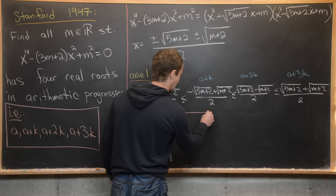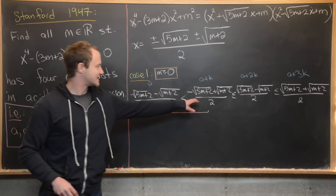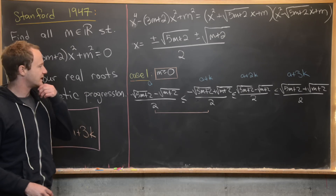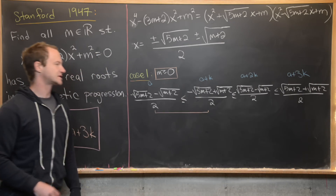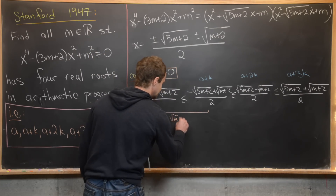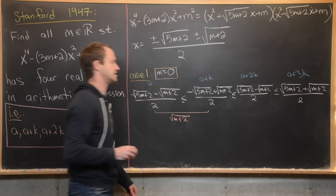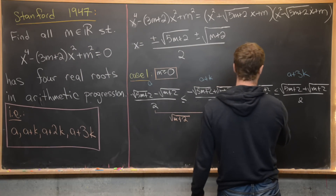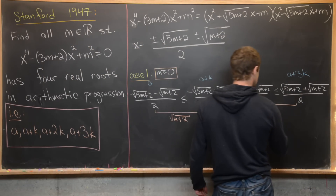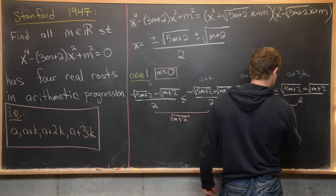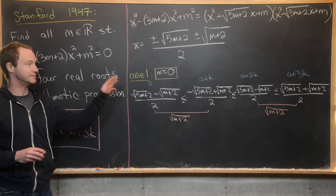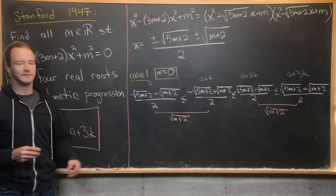Now let's calculate the distances between consecutive roots. The distance between the second and first root is √(m+2) — the √(5m+2) terms cancel. The distance between the fourth and third root is also √(m+2), so those are automatically equal.